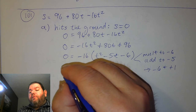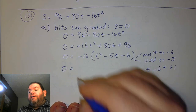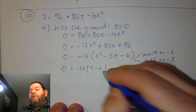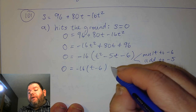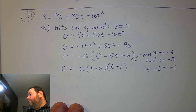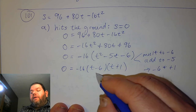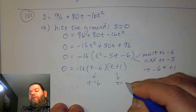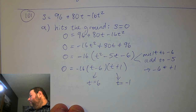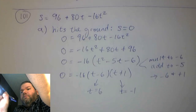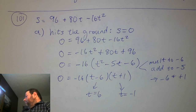That's going to be our factorization. We'll have 0 equals negative 16 times t minus 6 times t plus 1. That gives us two solutions: t equals 6 and t equals negative 1.